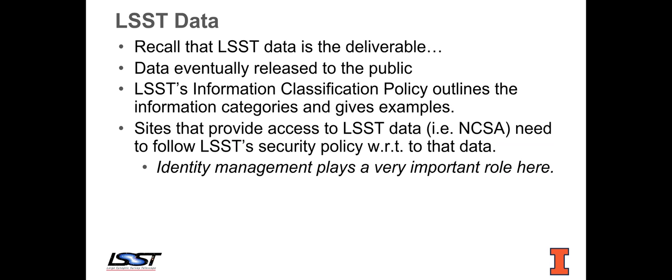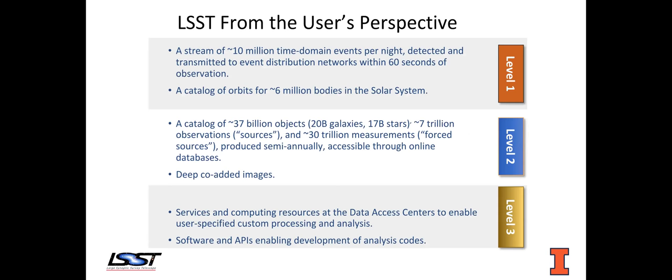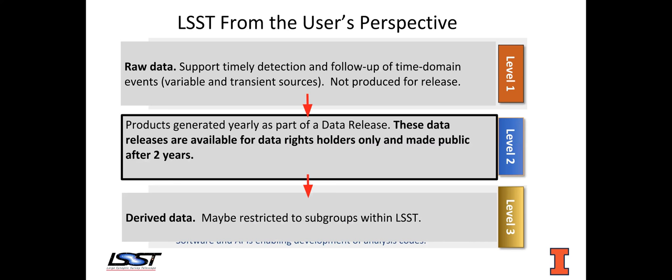This is where identity management plays a very important role. From the user's perspective, there are really three levels to this. Most users are concerned about level two — this is the data that gets released, that US astronomers will search through and do their computations and findings on. These astronomers may also derive data from this level two data; we call that level three. This derived data is restricted to subgroups within LSST, so one group might derive data that they don't want other people in LSST to necessarily have access to.